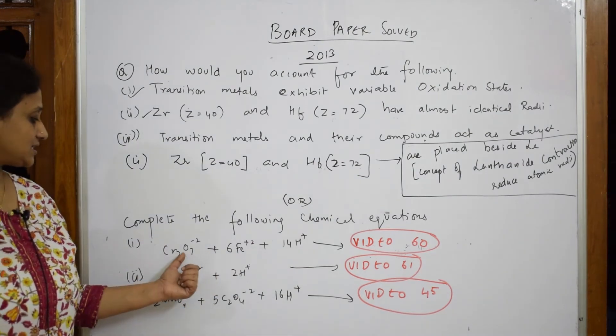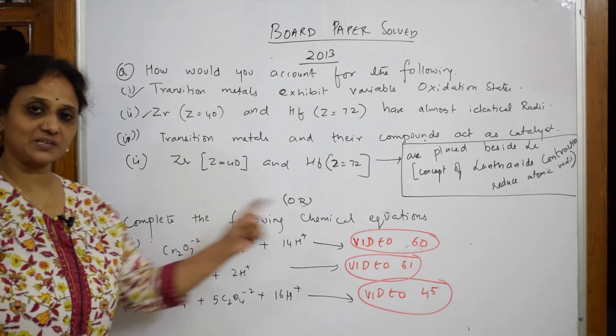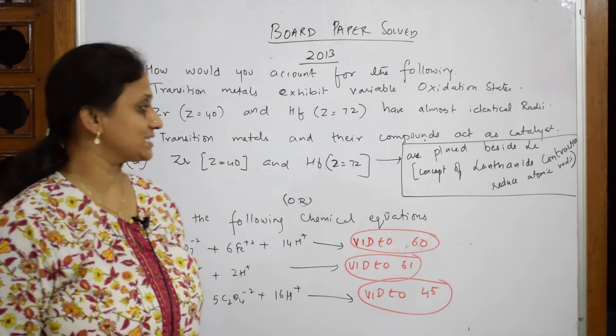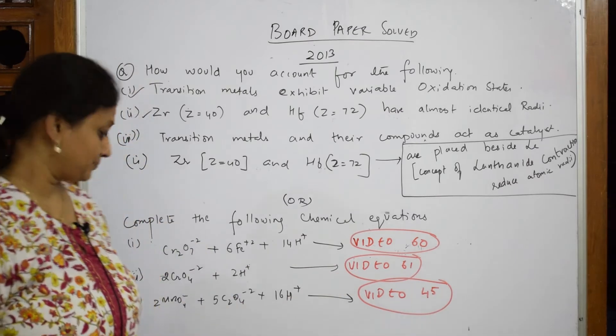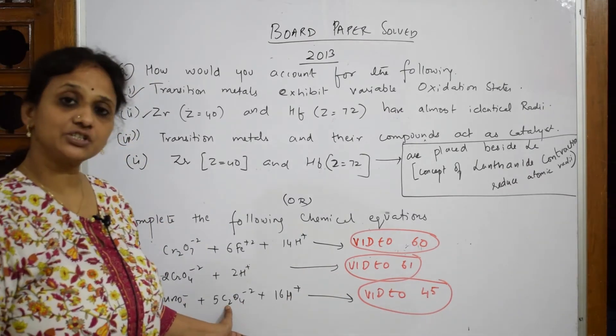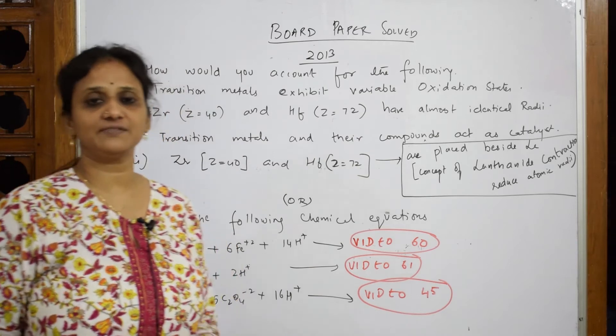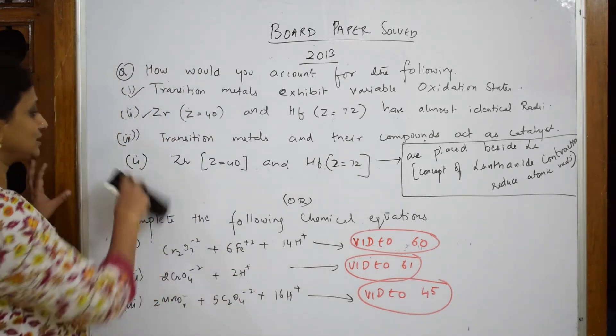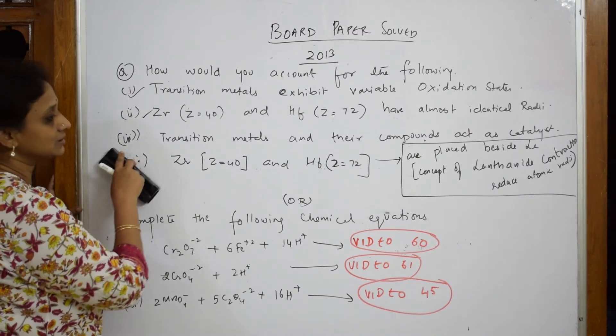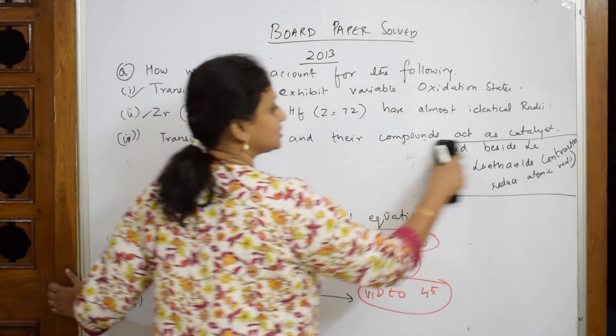Same, here oxidizing property converting Fe plus 2 to plus 3. I have done under video number 60. Here there's one more with sulfuric acid, video number 61. And with oxalate converting into carbon dioxide, video number 45. Please watch that video carefully and then come back and write the reactions. Now I left one thing. Let us write this third one. I have not done the third one.